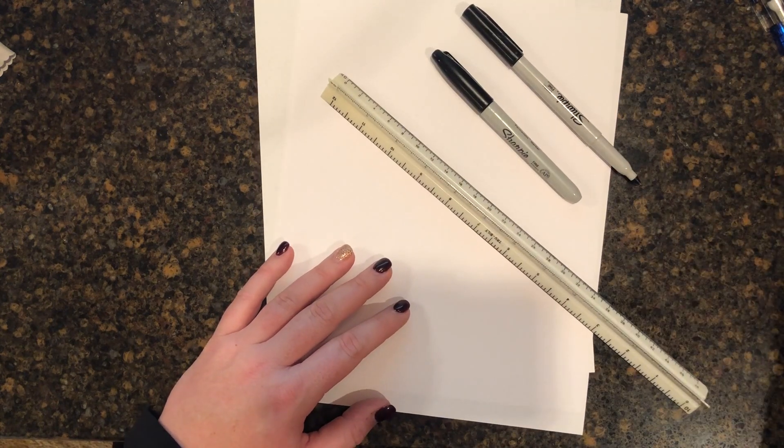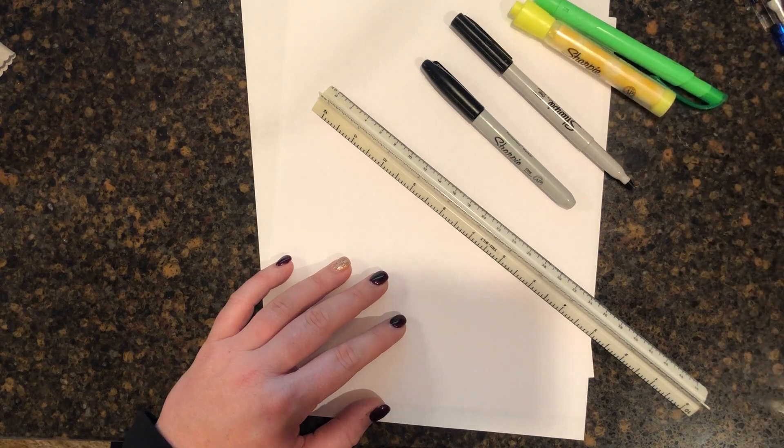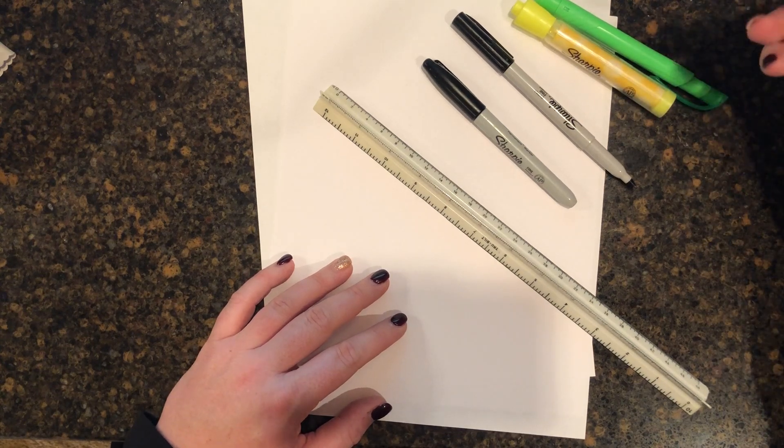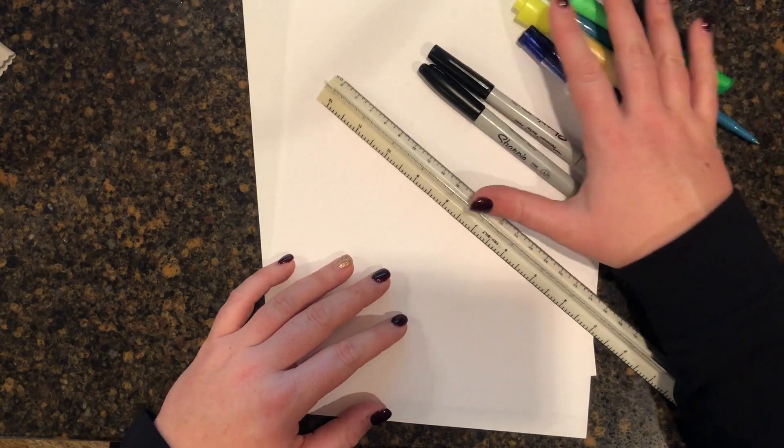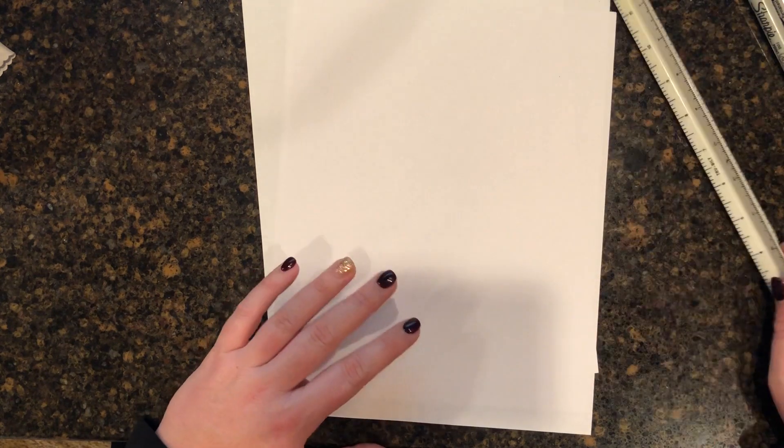You're gonna need a ruler, maybe some highlighters or markers if you want to make it colorful, a pencil for sure, and maybe even a pen. Okay, so once you've gathered all your materials, let's get timeline making.